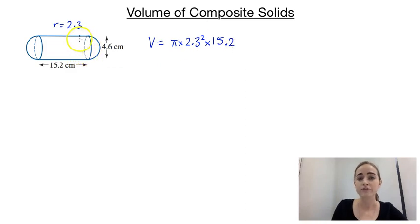So that's the formula for the volume of the cylinder and then we need the sphere on the ends. So we're going to plus 4 over 3 times pi times the radius cubed so that's our 2.3 again, cubed.